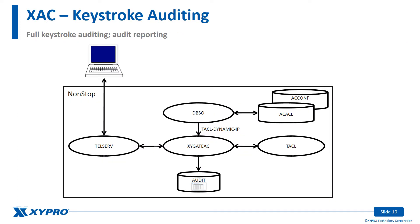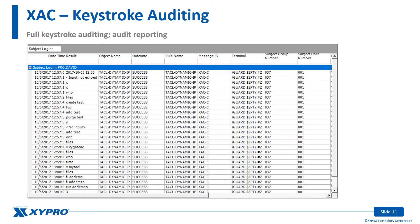The contents of the XAC audit file can be viewed a number of ways. In this example, the Zygate Report Manager was used. XAC audit file entries are made for all activity, regardless of whether from TACL or a program utility such as FUP.